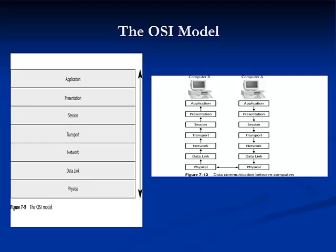The session layer establishes and maintains communication between two nodes on the network. It can be considered the traffic cop of network communications. The term session refers to a connection for data exchange between two parties, and it is often used in the context of terminal and mainframe communications. The presentation layer, the sixth OSI model layer, serves as a translator between the application and the network. At the presentation layer, data is formatted in a schema that the network can understand, and it also manages data encryption and decryption, such as the scrambling of passwords.